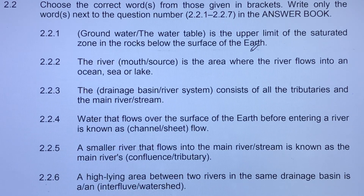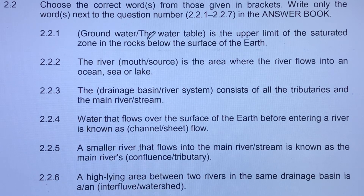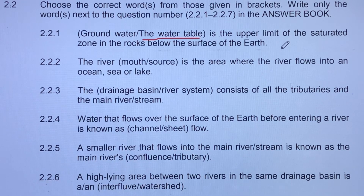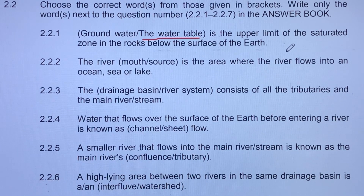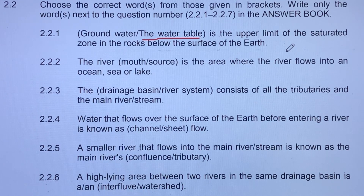The correct answer is the water table — that is the upper limit of the saturated rocks below the earth's surface. The water table is the maximum level of the groundwater. So if we have groundwater underneath the earth's surface, the uppermost level there is the water table.